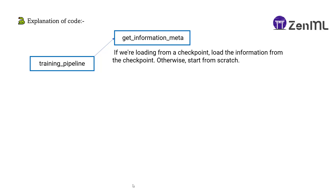The next step is get information meta. Assume that you have a trained model or your model was training and you exited — now you need to restart the training or load the information from where you stopped. Get information meta loads the information from the checkpoint from where it stopped; otherwise it will start from scratch.